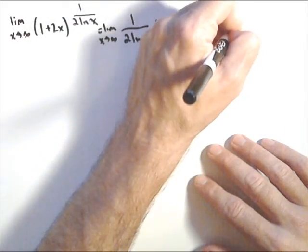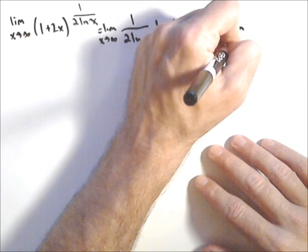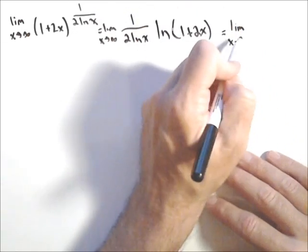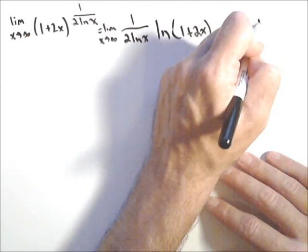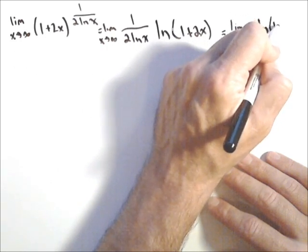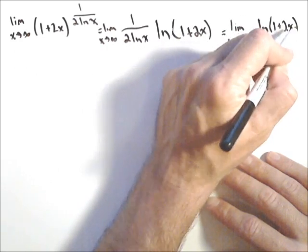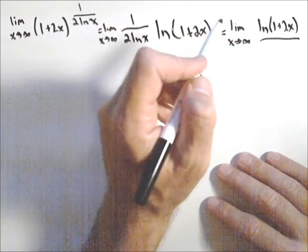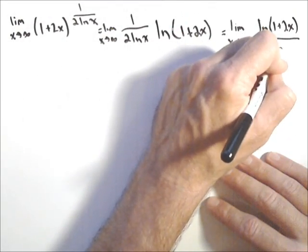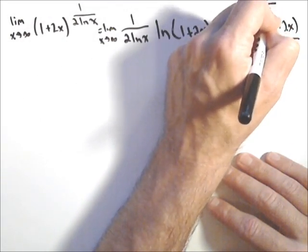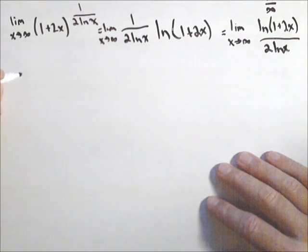So what I wanna do is write them over top of each other. ln of one plus two x over two ln x. It's a clear cut infinity over infinity case.